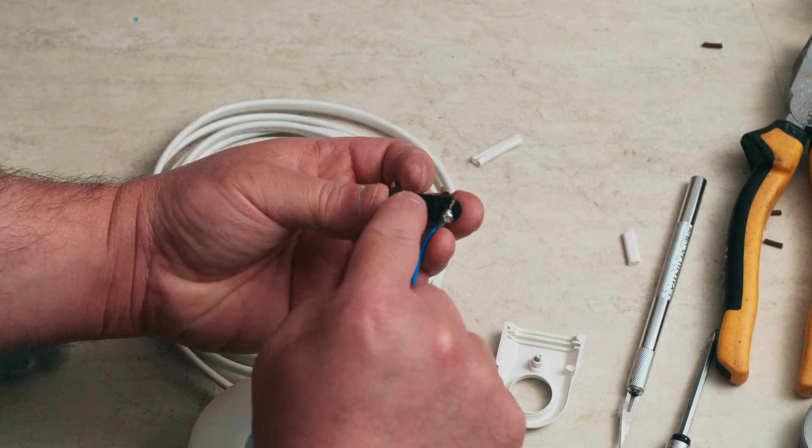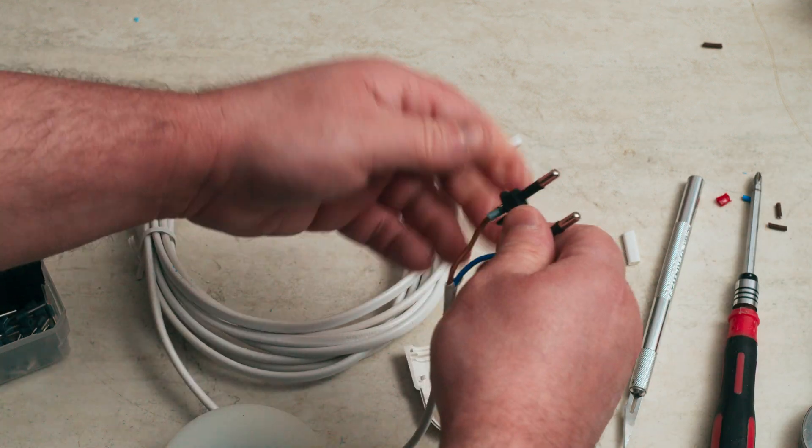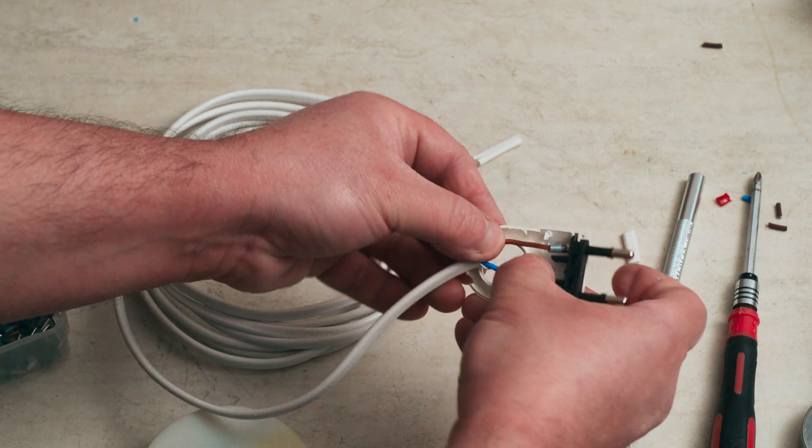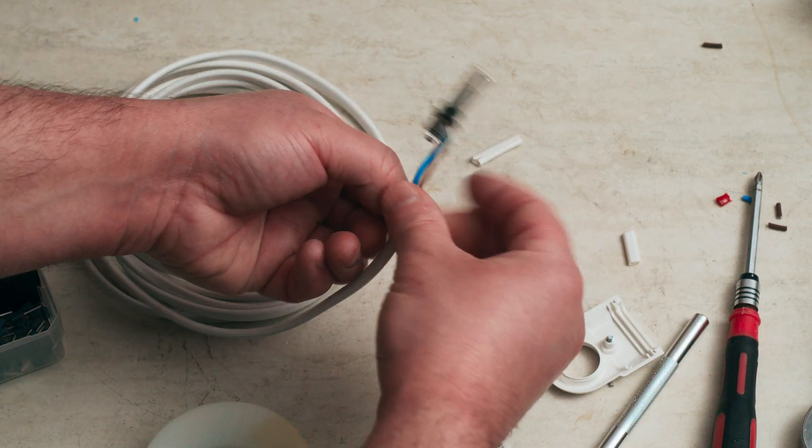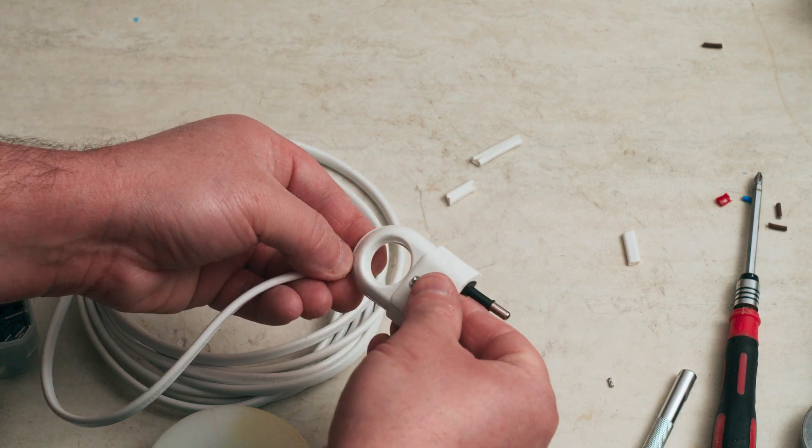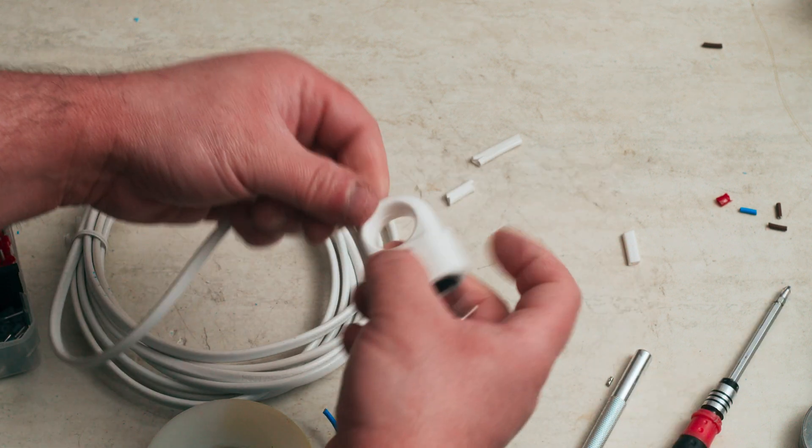Then trim the ferrules as needed and tighten them. Further stripping of the outer jacket might be needed. This might not be the best way of attaching a mains plug to a cable, but it works well for me.